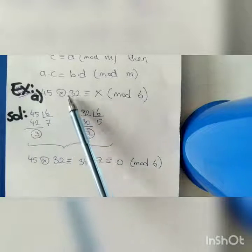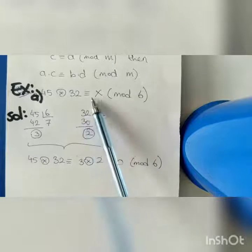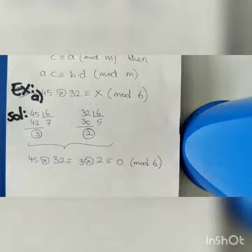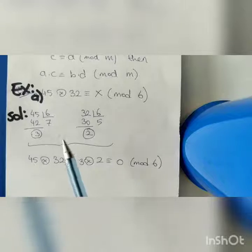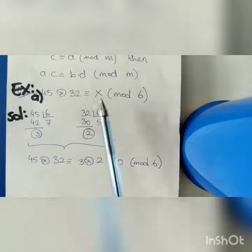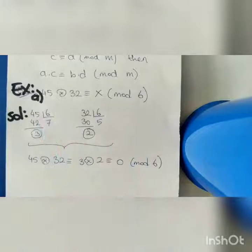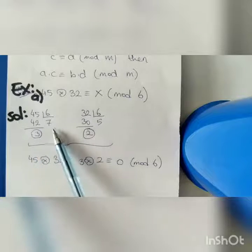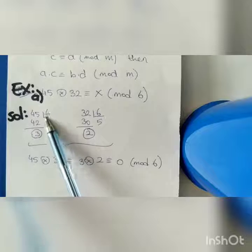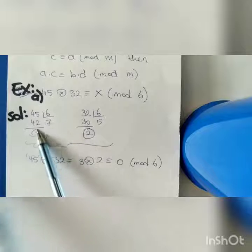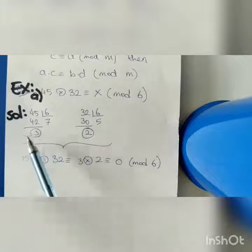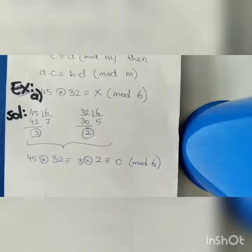Our first example is 45 multiplied by 32, which is equivalent to x modulo 6. First of all, we should find the equivalent number of 45. If we divide 45 by 6, we get 7 with remainder 3. So 3 is our equivalent number of 45 modulo 6.